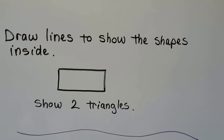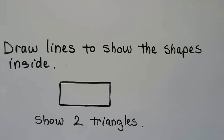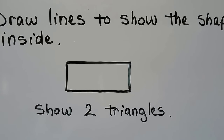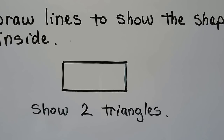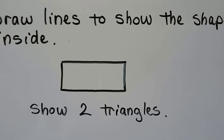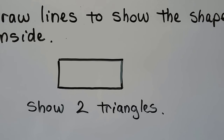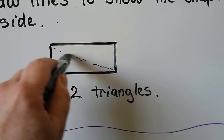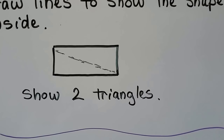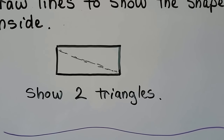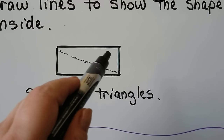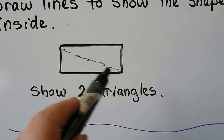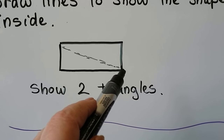Draw lines to show shapes inside. It wants us to show two triangles from this rectangle. Do you know how we can make two triangles from the rectangle? We just went from this corner across and down to that corner. Do you see the two triangles now? Here's one, here's two.